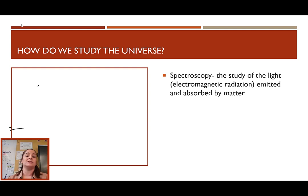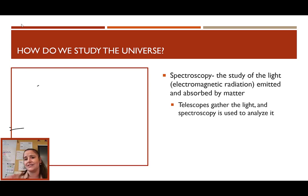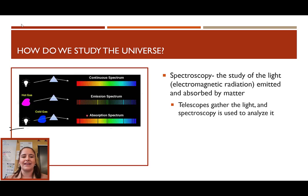So we study the universe using spectroscopy. Now, spectroscopy is the study of the light, a.k.a. electromagnetic radiation, not limited to just the visible light we see, but also including infrared and ultraviolet rays and gamma rays, and radio and all of that. And we don't have the technology to visit other stars or other galaxies and collect samples and bring them back to Earth to study them. All we have are telescopes. So we use telescopes to gather the light and use spectroscopy to analyze it.